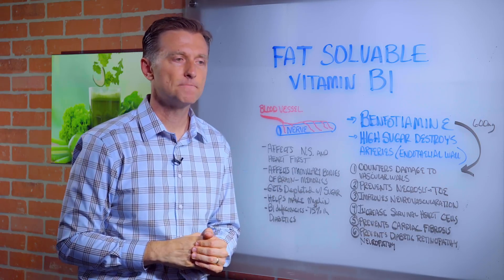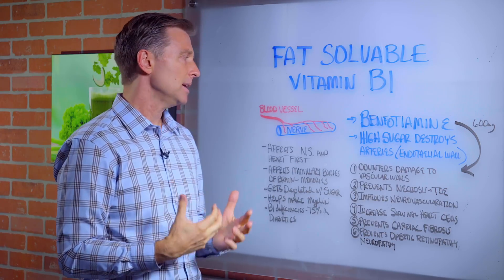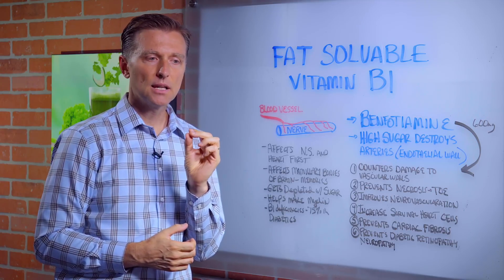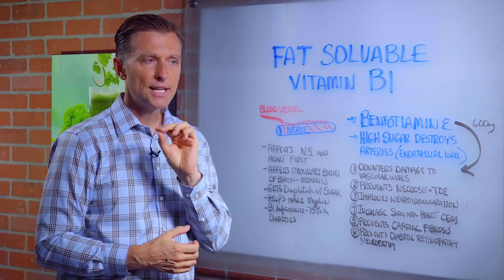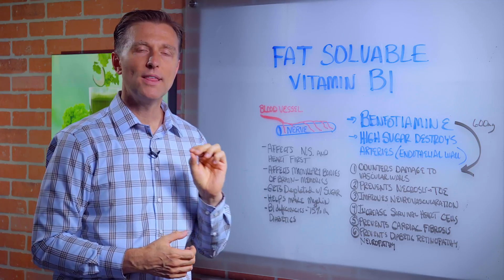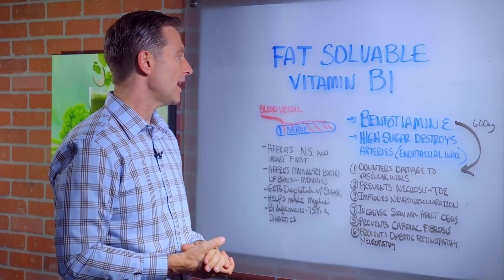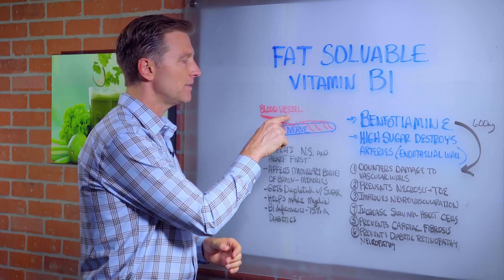Vitamin B1 does a lot of things. But related to diabetes, it is involved in keeping the lining of the blood vessels nice and strong. Without B1, you have a problem with the vascular system, the blood vessels.